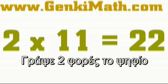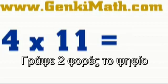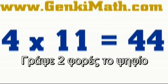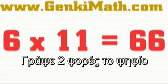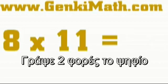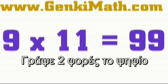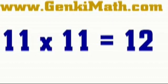Two times eleven is twenty-two. Three times eleven is thirty-three. Four times eleven is forty-four. Five times eleven is fifty-five. Six times eleven is sixty-six. Seven times eleven is seventy-seven. Eight times eleven is eighty-eight. Nine times eleven is ninety-nine. Ten times eleven is one hundred and ten. 11 times 11 is 121.